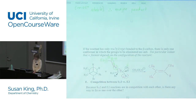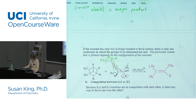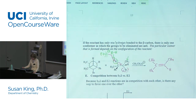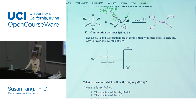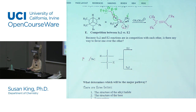All right, and so that moves us to competition between SN2 versus E2. We're done talking about all the aspects of the E2, and now we're going to talk about competition between the SN2 and the E2 because SN2 and E2 reactions are in competition with each other. Is there a way to favor one or the other? Let's show both reactions here. This is our nucleophile slash base — it's the same species; most of the examples we've done have used ethoxide.